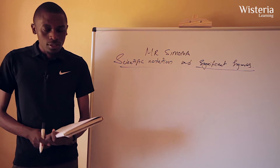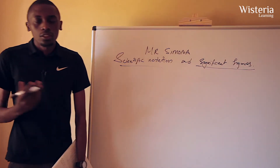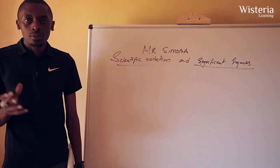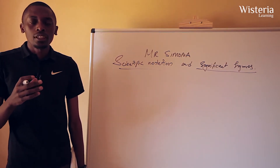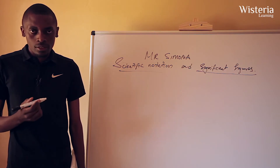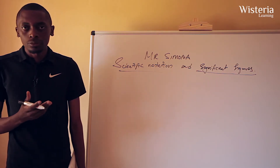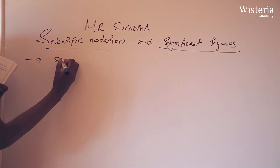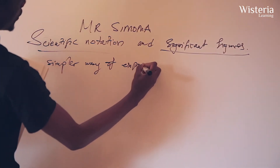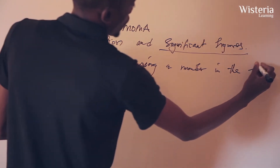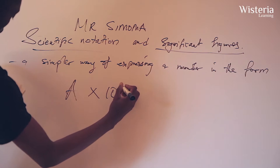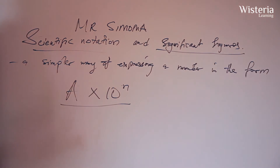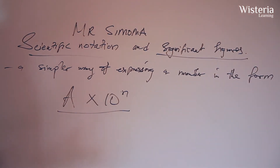A question may arise: what then is scientific notation? Scientific notation is just a simpler way of expressing a very large number or a very small number in an easy and convenient way. It's a simpler way of expressing a number — a large number — in the form a times 10 to the power n. So we are expressing a large or small number in this format.